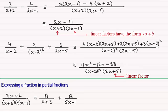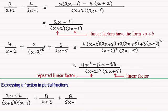This factor (x - 2)² is referred to as a repeated linear factor. You can see that what we get is a constant over just (x - 2), and then another constant over that factor repeated — this time squared. So it is important to recognise what type of factors you've got in the denominator, as it affects the kind of partial fractions you get in your answer.